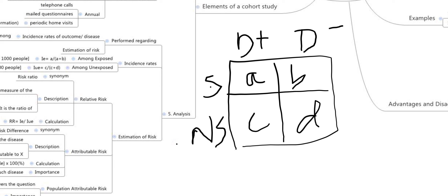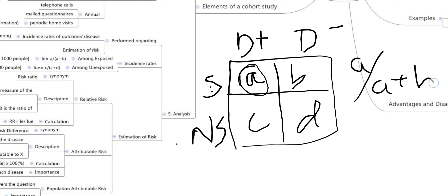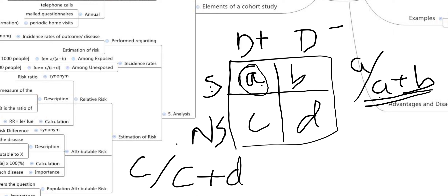In the two-by-two table, we have two rows and two columns labeled a, b, c, and d. On top we write the disease and on the side we write the risk factor. For example, comparing smoking and lung cancer: the incidence rate among exposed is the number of smokers with disease (a) divided by the total number exposed (a + b). The incidence rate among non-exposed is c / (c + d).